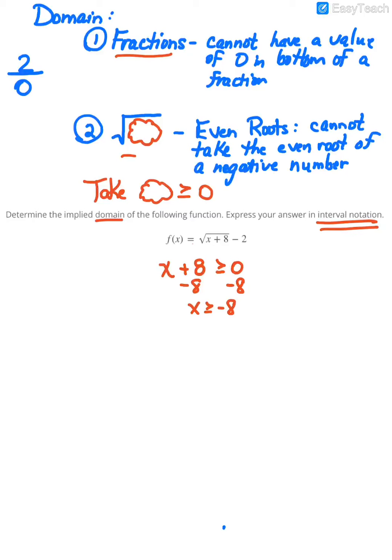Now because they want my answer in interval notation, I've got to picture the graph, whether I draw it or just picture it in my mind. If x is equal to negative 8, it would look like that. Greater than negative 8 would go to the right. So in interval notation, this graph starts at negative 8, it touches, and because it just keeps going to the right, we say that it goes to infinity. That is what my domain would look like in interval notation.